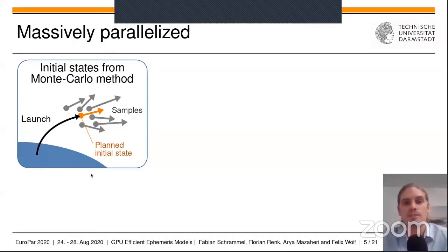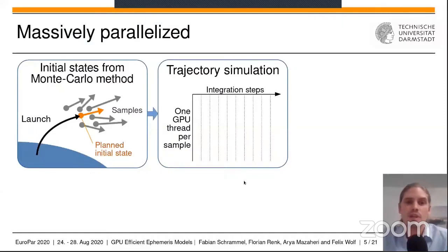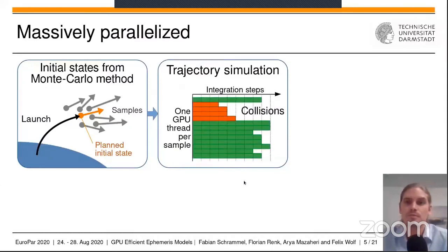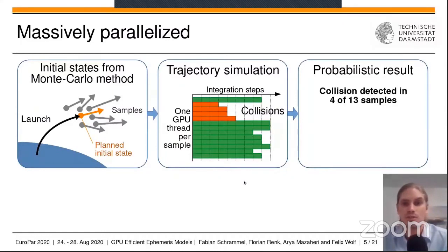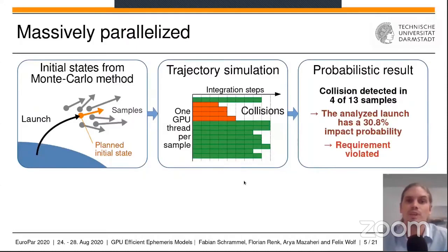One GPU thread is started to handle each of these samples. And step by step, their trajectories are simulated accordingly. Here we detect collisions with celestial bodies, and a probabilistic result can now be calculated from this data. We detected four collisions out of 13 samples. This results in an impact probability of 30.8% for this specific planned initial state. This is a lot, which is why the requirement is violated.